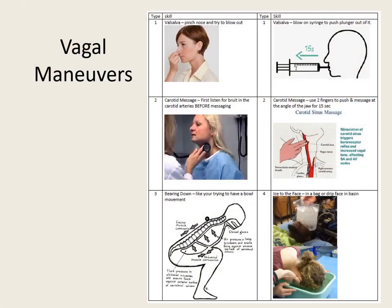Let's review our vagal maneuvers. We can Valsalva — squeezing our nose and blowing out or blowing on that syringe. Or carotid massage — listen for those bruits and then massage at the corner of that jaw. You can also bear down like you're having a bowel movement. And for younger patients, dip their head in ice water or use an ice bag to the face. Try those, and if it doesn't work, we'll go to the next treatment.